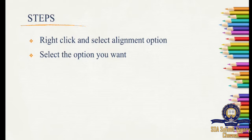So how do you change the cell alignment? You have to right-click and select the Cell Alignment option. Keep the pointer in whichever cell you want to align, right-click, and you will get an option called Cell Alignment. Click there and select whichever option you want — for vertical alignment, select top, center, or bottom; for horizontal alignment, select right, left, or center.